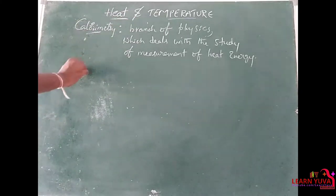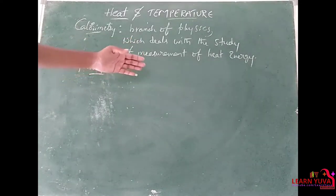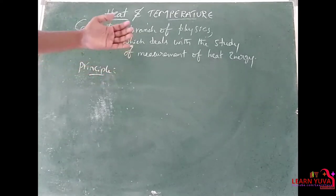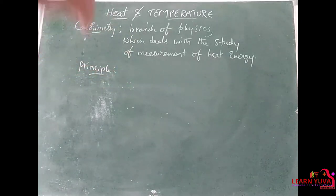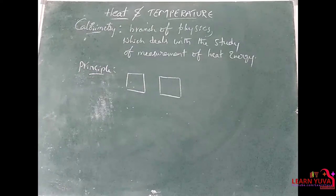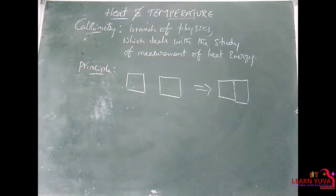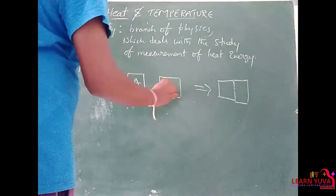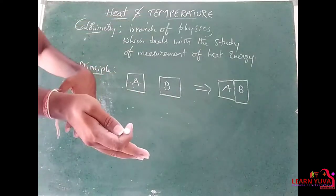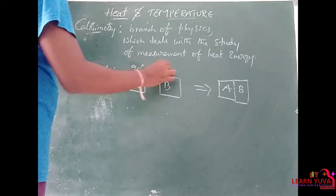There is a principle for calorimetry. The principle is: if two bodies at different temperatures are in thermal contact and no heat is allowed to go out or enter from the surroundings, then these two bodies — for example, body A at 90 degrees Celsius and body B at 35 degrees Celsius — exchange heat only with each other.